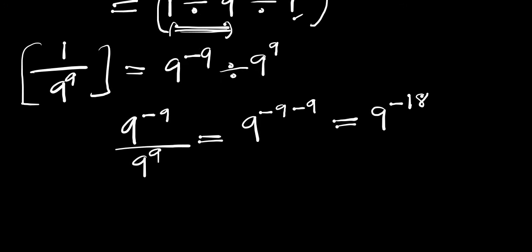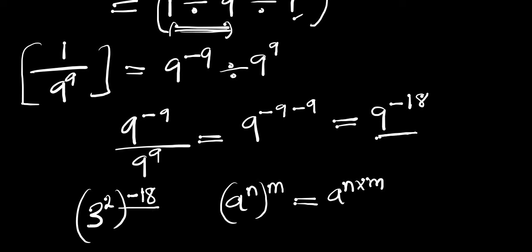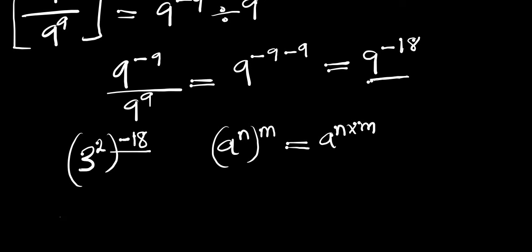Now we can reduce this further. 9 is a perfect square, so we can write 9 as 3 to the power of 2, and this is all to the power of negative 18. We make use of the identity: if you have a to the power of n, to the power of m, this equals a to the power of n times m. Let's multiply this out: 2 times negative 18 is negative 36, giving us 3 to the power of negative 36.